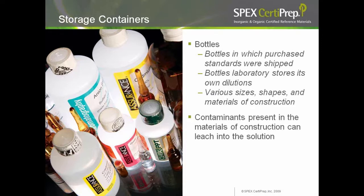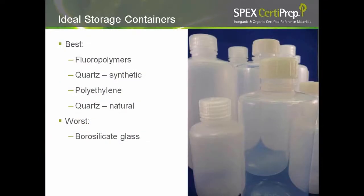Next to be considered are bottles. Calibration standards are shipped to you in bottles, and you store diluted solutions in bottles. Trace impurities from the walls of bottles can leach into solution — the quantity depends on the material used. The ideal storage containers are fluoropolymers (Teflon), synthetic quartz, polyethylene, and natural quartz. Borosilicate glass leaches boron and silicon and is not suitable for trace metal analysis.